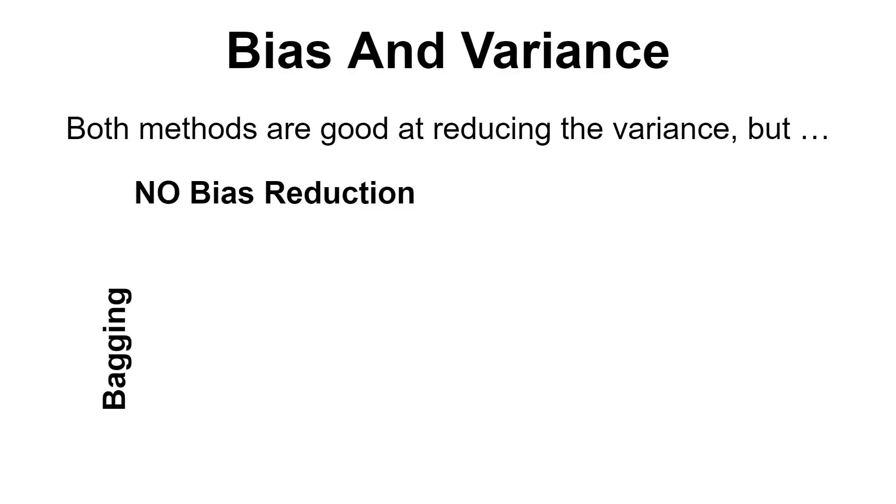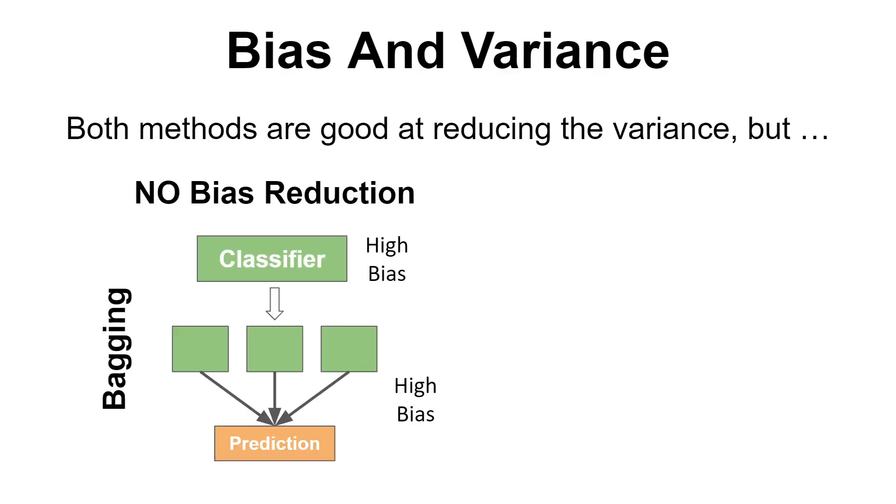As in any machine learning problem, the bias and variance of the system plays an important role in the final performance. In our case, because they are an ensemble, both bagging and boosting are good at reducing the variance. However, bagging has close to zero bias reduction.